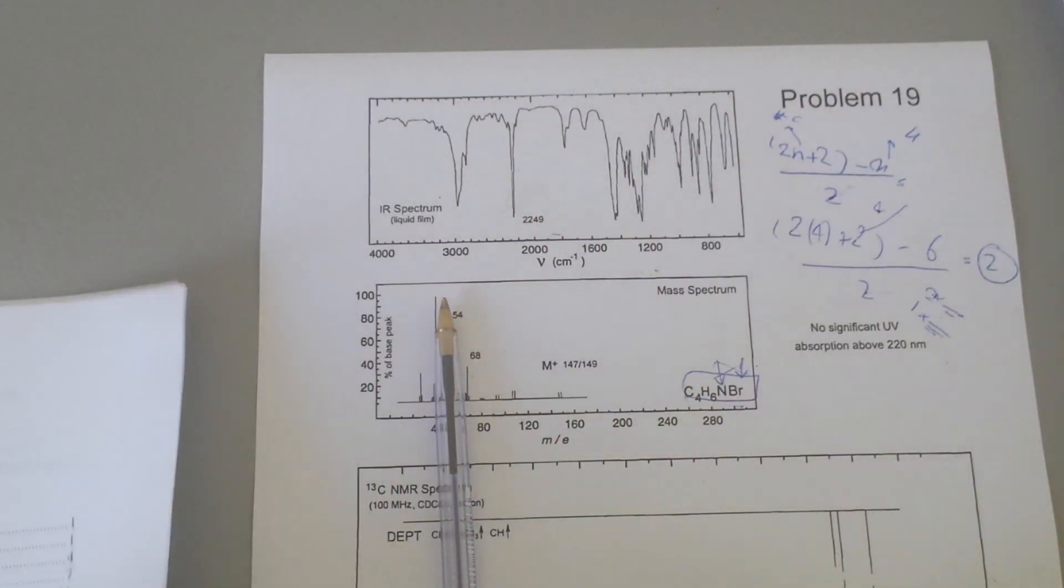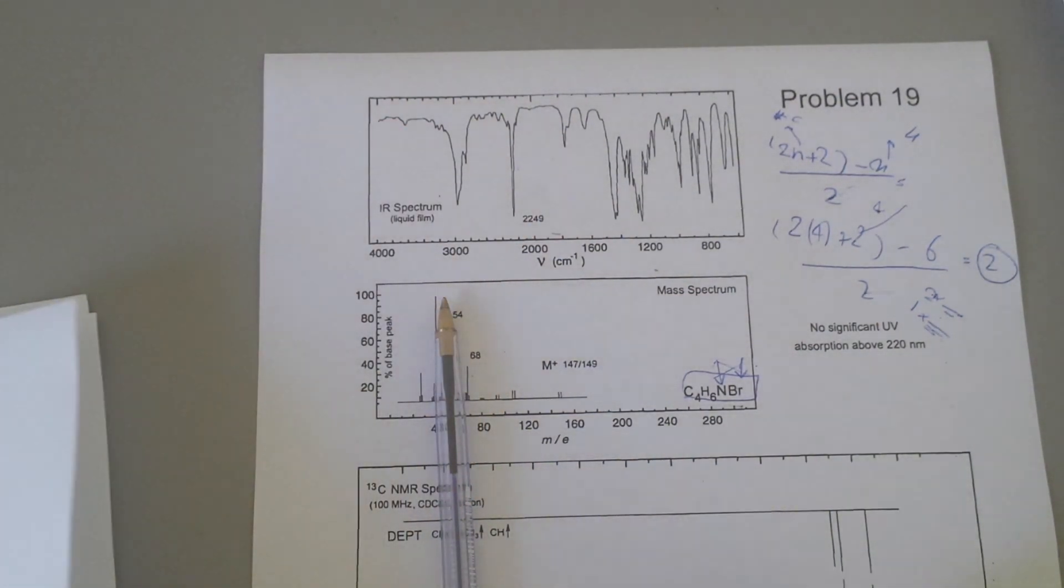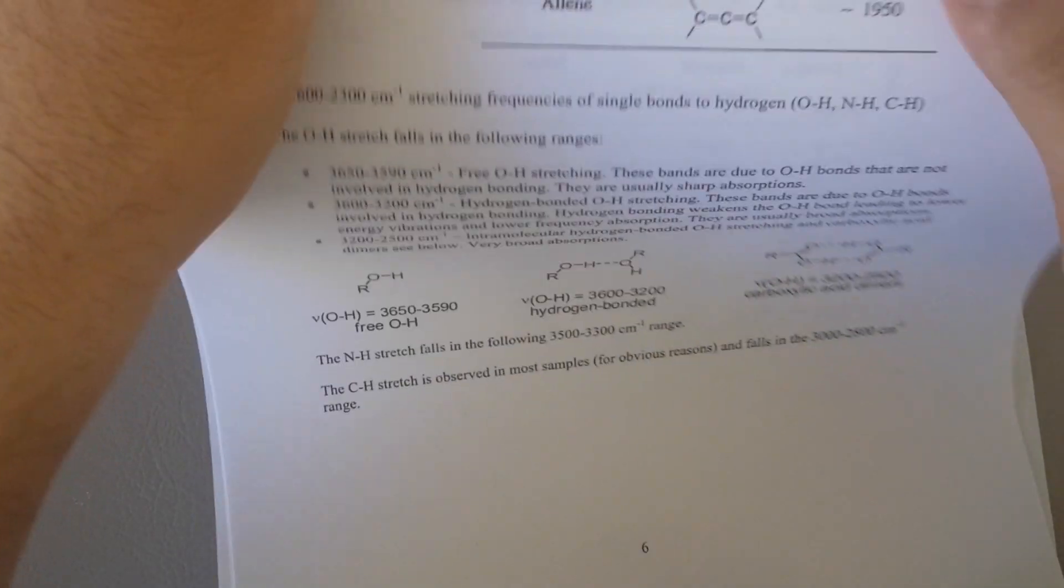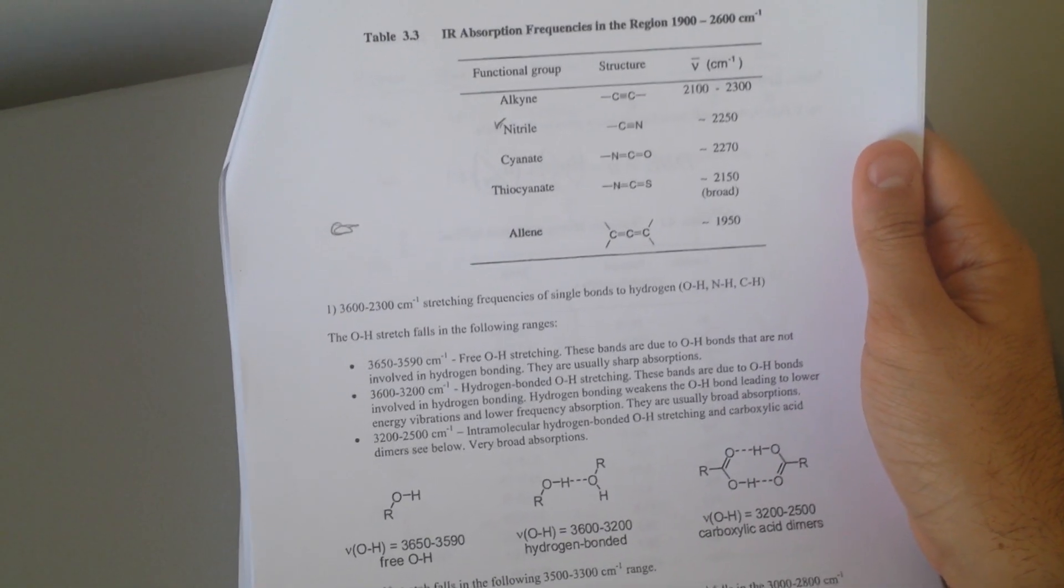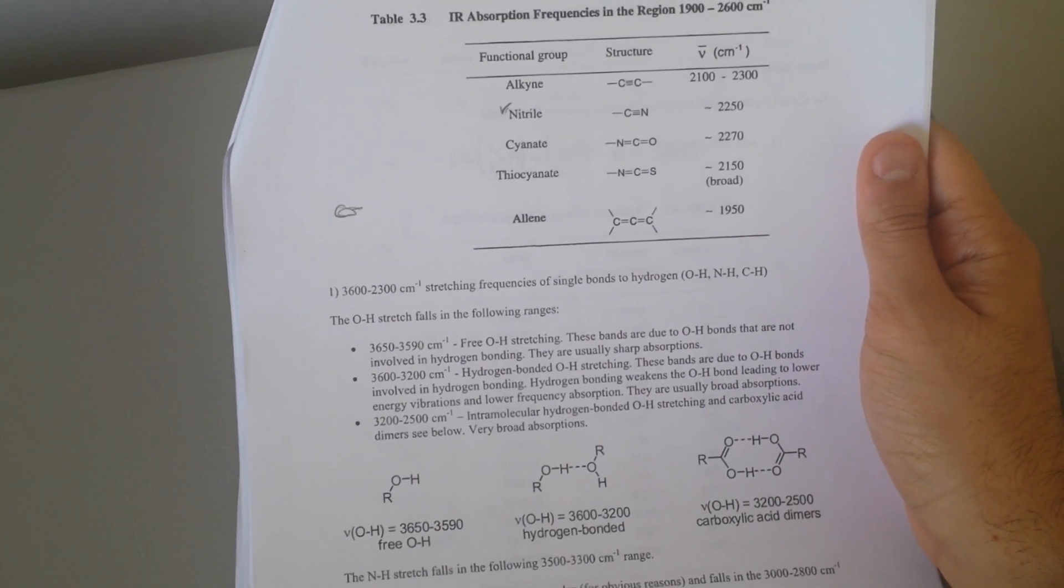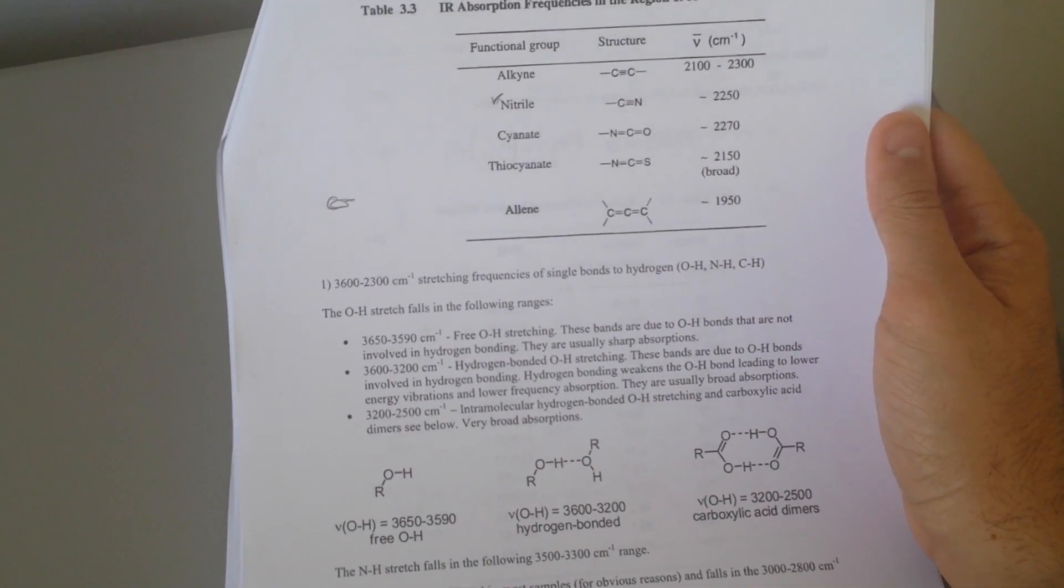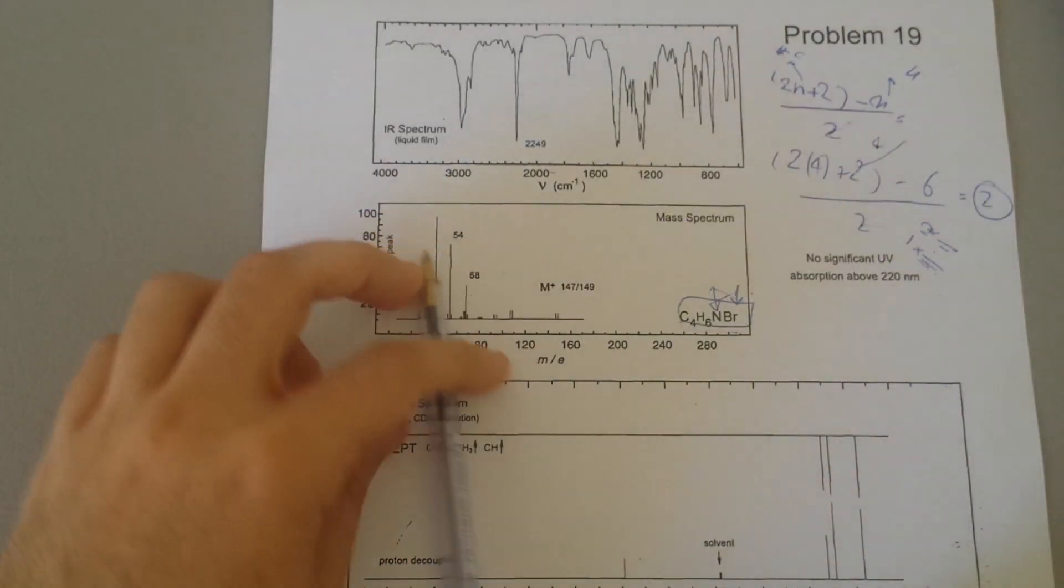So we have one major peak at 2249. You always have your reference table. I'm sure you're given it in an exam. So here you can already see, in the 2,250 range we have a nitrile group. So this means we are dealing with one triple bond and not two double bonds.